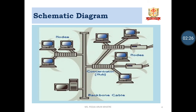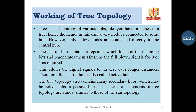Here is the diagram of tree topology. The backbone looks like a bus topology and the other branches look like a star topology. Working of tree topology: the tree has a hierarchy of various hubs like branches in a tree. Every node is connected to some hub; however, only a few nodes are connected directly to the central hub. The central hub contains a repeater which looks at the incoming bits and regenerates them afresh as a full signal — 0s and 1s as required — allowing the digital signal to travel over longer distances. Therefore, the central hub is also called an active hub. The tree topology also contains many secondary hubs which may be active or passive hubs.